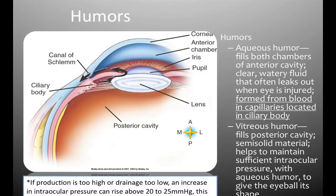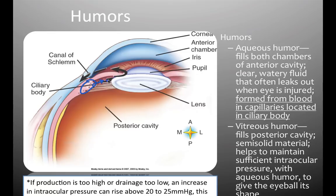The fluid in front of the lens is called aqueous humor. The ciliary bodies produce this fluid, which fills the anterior chamber. We mentioned the canal of Schlem earlier — that's the drainage point for those fluids, and it's a continuous process. If people damage their eye, it will often be this aqueous humor that winds up leaking out.